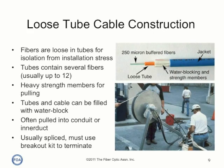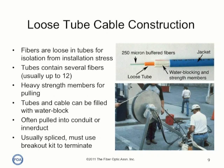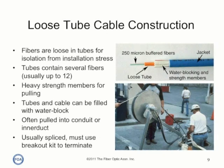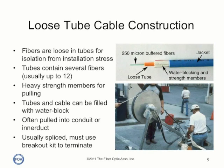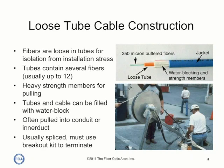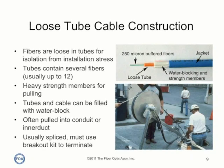Loose tube cable is used for most outdoor installations because it has higher tensile strength for pulling long distances or aerial installs and can be filled with gel or powder to provide protection from moisture or water. Loose tube cable contains one or more tubes which can contain up to 12 individual fibers.